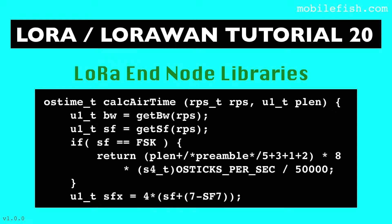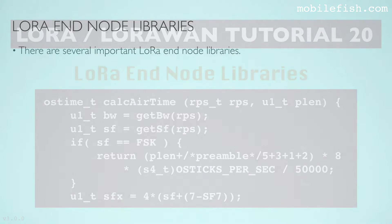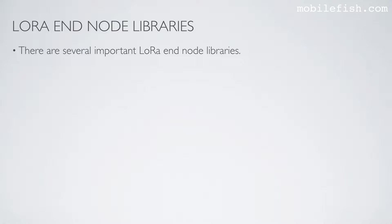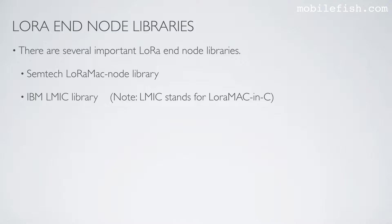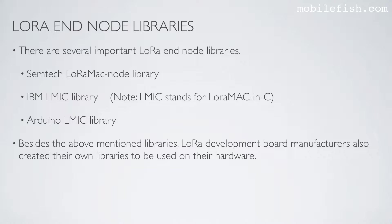In this tutorial I will explain the origins of several LoRa Node libraries and where these libraries are used. There are several important LoRa Node libraries: the Semtech LoRaMAC-Node library, the IBM LMIC library — please note LMIC stands for LoRa MAC in C — and the Arduino LMIC library. Besides these, LoRa development board manufacturers also created their own libraries to be used on their hardware.